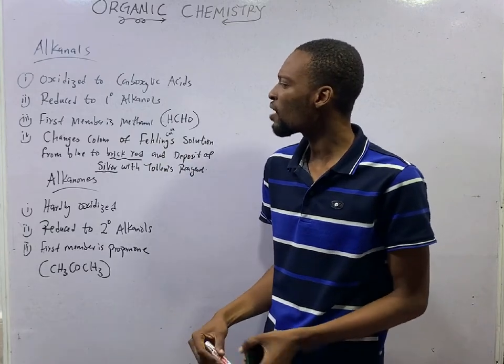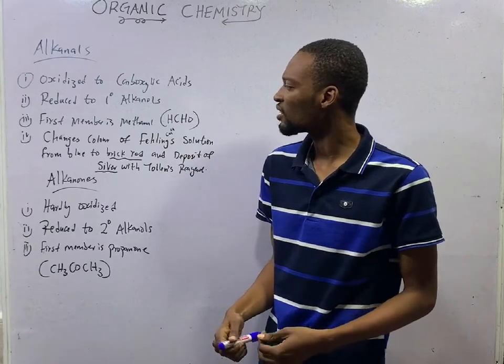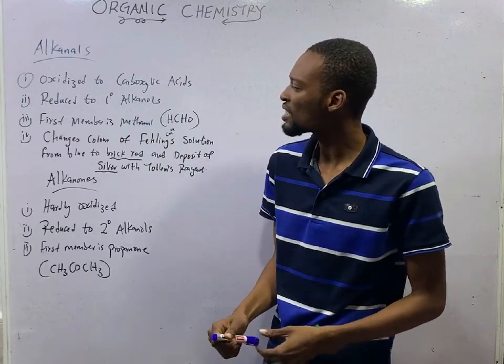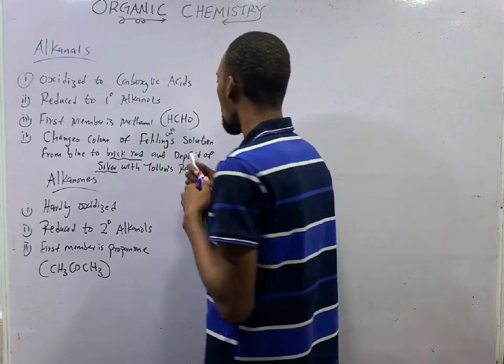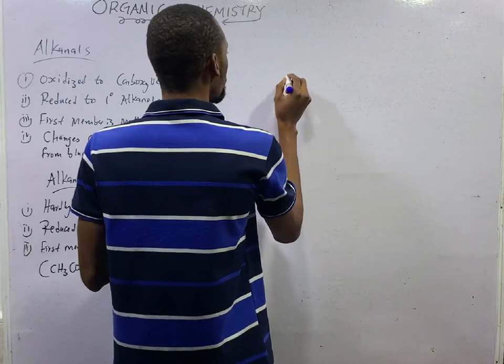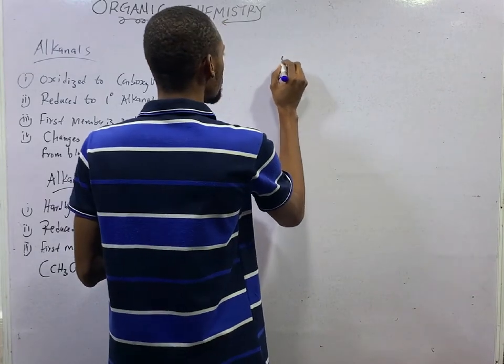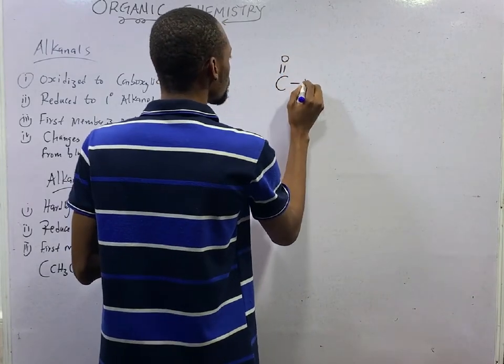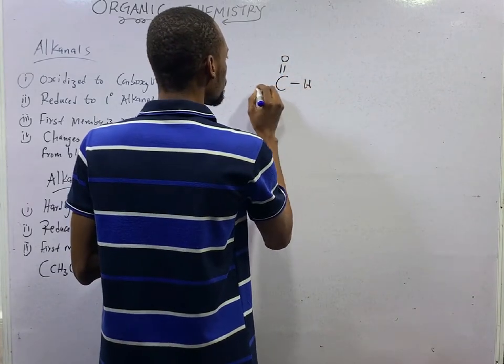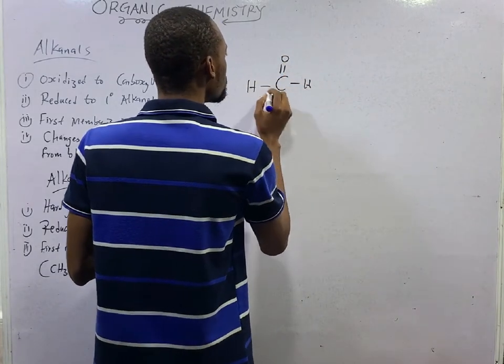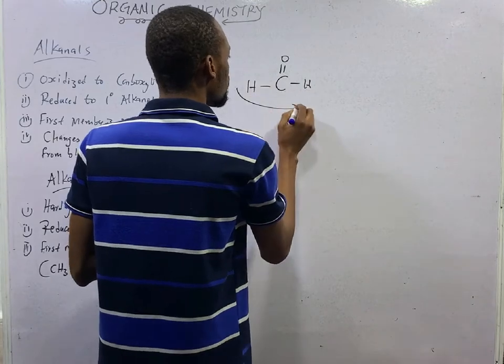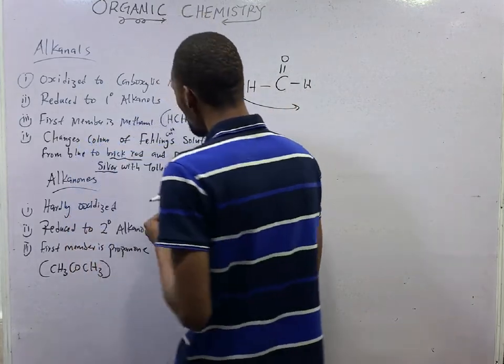The first member of the Aldehydes is Methanal, and we've seen that before. The functional group is CHO — this is Methanal, the first member.